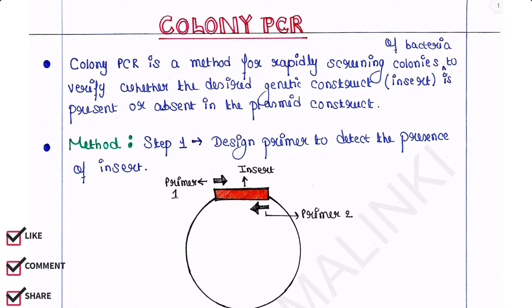Colony PCR is a method to quickly determine whether your clone is successful or not. Colony PCR is a method for rapidly screening colonies of bacteria to verify whether the desired genetic construct—that is, the insert—is present or absent in the plasmid construct.